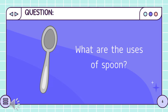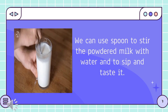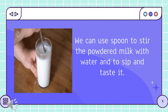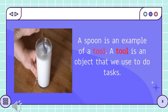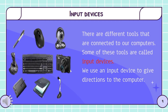Now, what are the uses of spoon? Please pause the video to give your answers. Thank you for answering, Grade 1. Great job! One way to use the spoon is to stir the powdered milk with water and to sip and taste it. A spoon is an example of a tool. A tool is an object we use to do tasks. There are different tools that are connected to our computers. Some of these tools are called input devices. We use an input device to give directions to the computer.